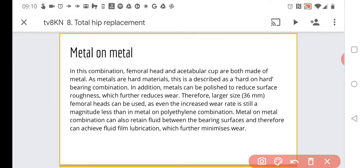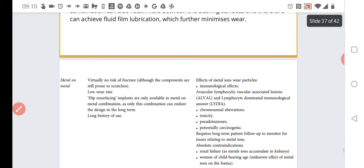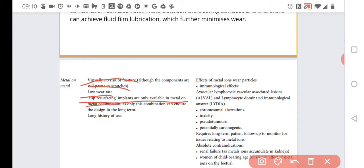Generally it's far harder to wear down such things. What are the pros and cons? Generally there is virtually no risk of fracture, although the components are still prone to scratches. Low wear rate. Hip resurfacing implants are only available in metal on metal combinations, as only this combination can endure the design in the long term. And there is also a long history of use.